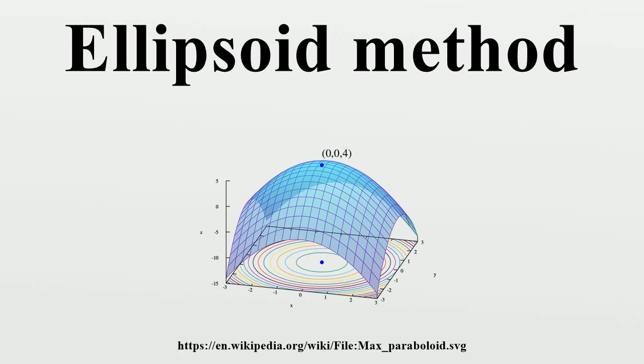It turns out that any linear programming problem can be reduced to a linear feasibility problem. One way to do this is by combining the primal and dual linear programs together into one program, and adding the additional constraint that the value of the primal solution is no worse than the value of the dual solution.